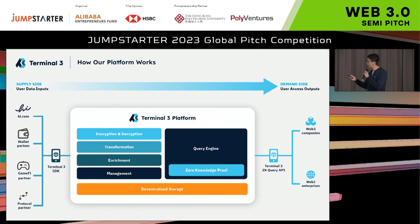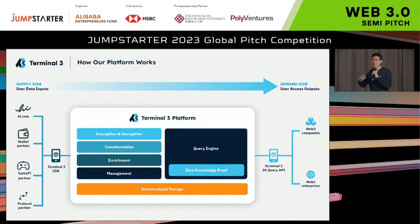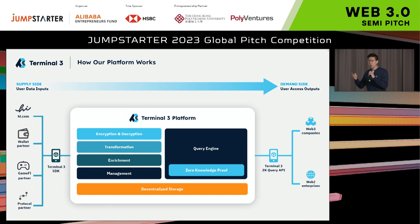Here is how the Terminal 3 platform works. User data enters Terminal 3 through our partners and our SDK integrations. That data is encrypted, standardized, and enriched with additional information from existing Web2 sources as well as on-chain data. All of that data is stored decentrally in decentralized nodes, which means no single company, no single entity — not even Terminal 3 — can control that data. Only the user can. But with a user's permission, companies can access that data through zero-knowledge APIs, which means the underlying data is never revealed and can never be copied.